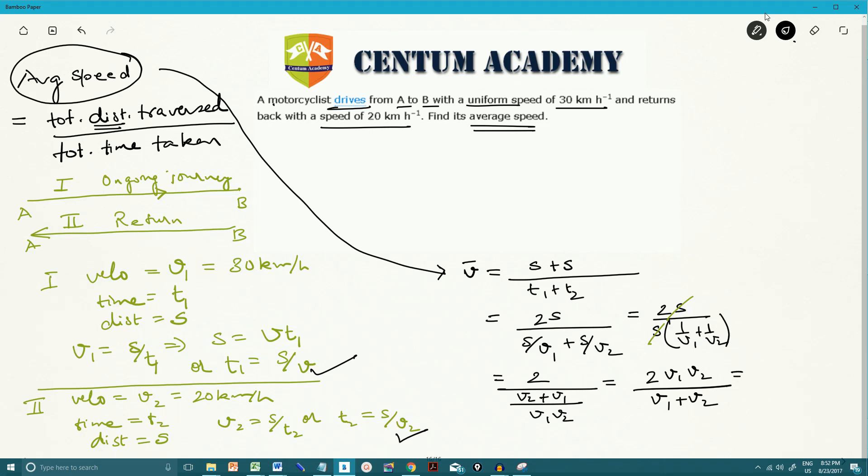Now let's substitute the value. So two times 30 into 20 divided by 30 plus 20. So hence this is 1200 divided by 50, and the units are kilometers per hour, because both V1 and V2 are in kilometers per hour. So if you see, this is 24. So average speed is 24 kilometers per hour.